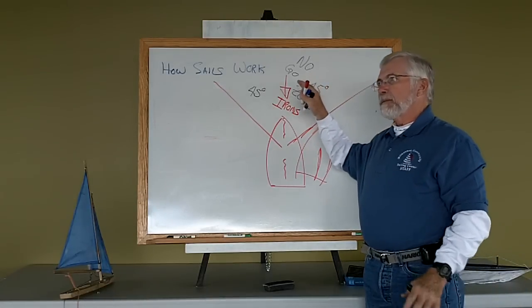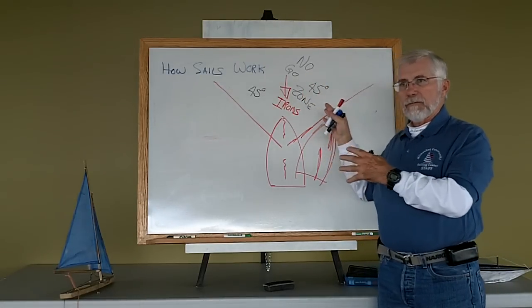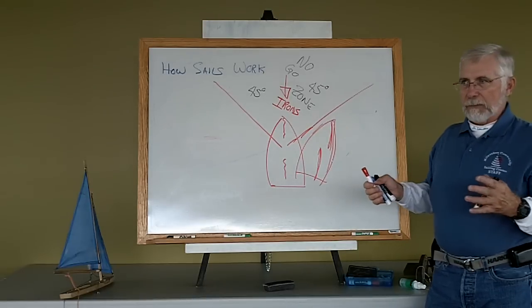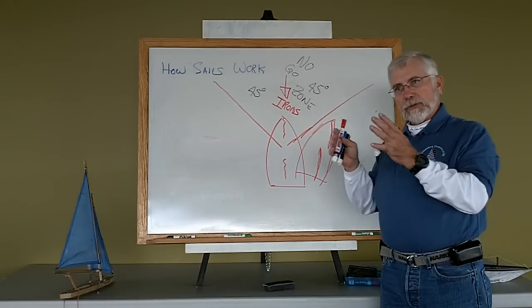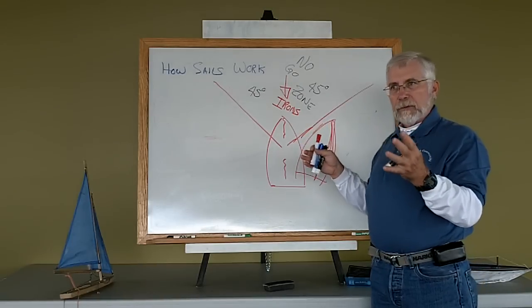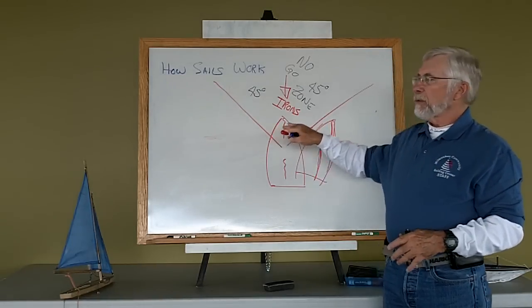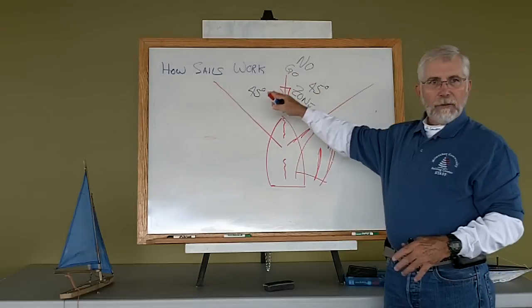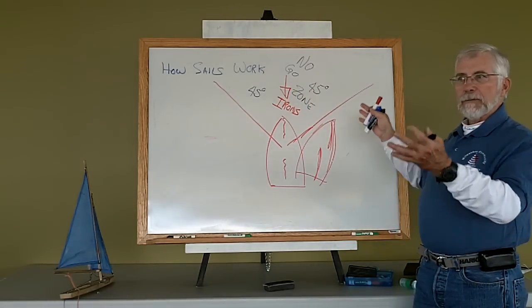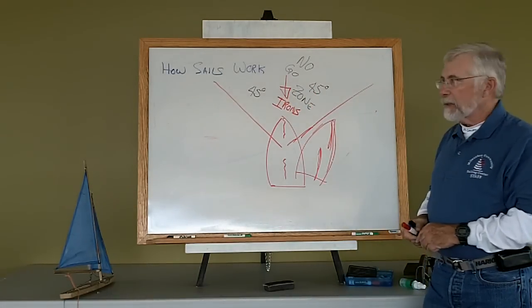There are different ranges for the no-go zone based on the characteristics of the particular boat. Some of your racing boats, that no-go zone might be more like 35 degrees on either side. For the day sailors that we tend to use, it's pretty much 45 degrees on either side of the wind, where we can't get enough shape in the sails to actually sail the boat.